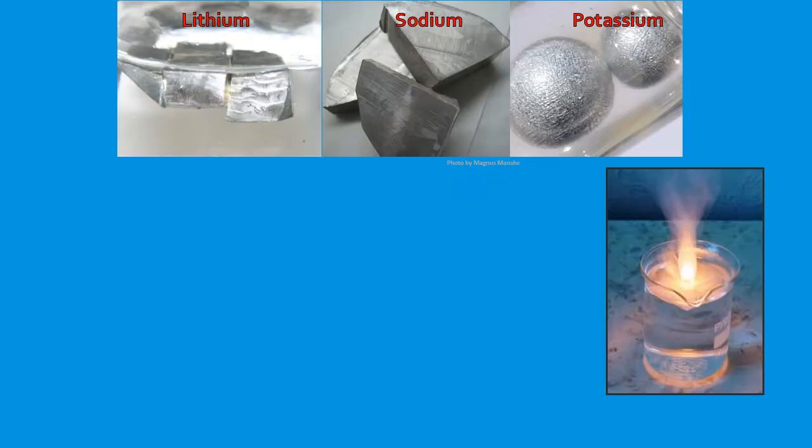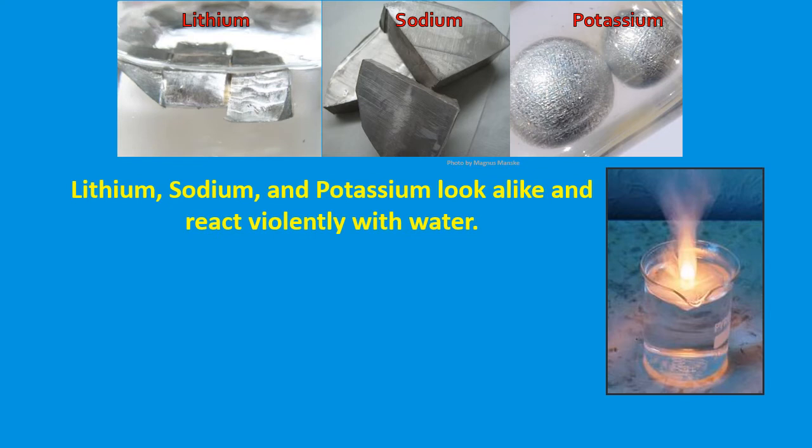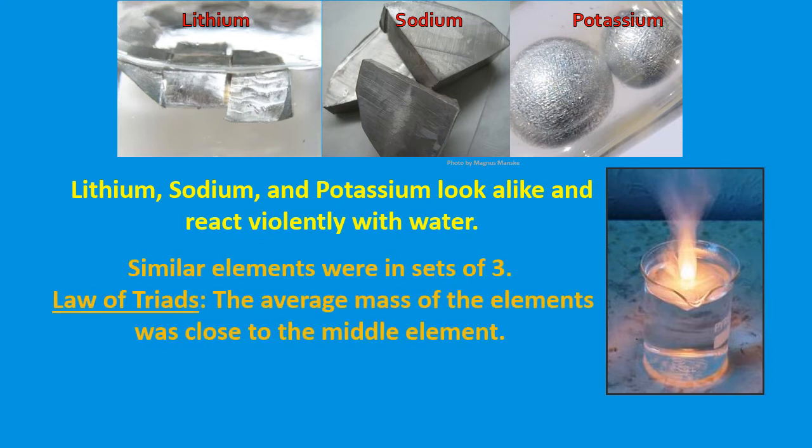Since scientists have been able to isolate and study single elements, they have known that some elements have very similar physical and chemical properties. So if you look at lithium, sodium, and potassium, they're all soft silvery gray metals that can be cut with a knife and they all react violently with water. Early chemists realized that for the known elements, the similarities between elements seem to come in sets of threes, which they called triads.